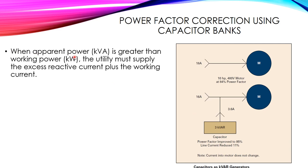When the apparent power in kilovolt-amperes is greater than the working power in kilowatts, this means our apparent power contains both active and reactive power, and the utility must supply the excess reactive current. We have Ia representing the active power current and Iq representing the reactive power current, so the excess reactive current must pass through the transmission line in addition to the active current.